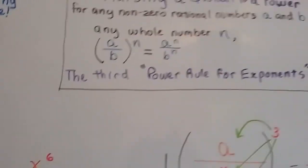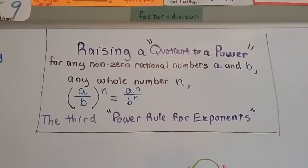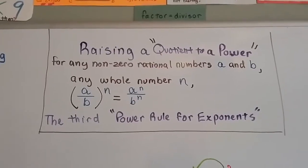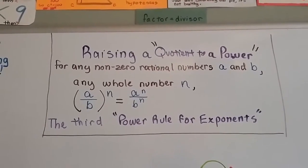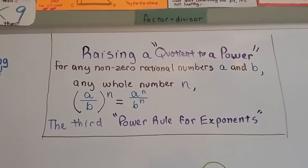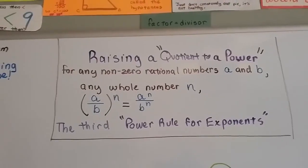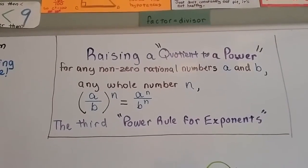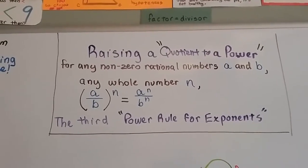So here's the formal third power rule for exponents. As I said a couple videos ago in the last video, there's three of these. This is raising a quotient to a power. For any non-zero, so it can't be zero, rational numbers a and b and any whole number n, if you have a over b to the nth power, it means a to the nth power divided by b to the nth power.